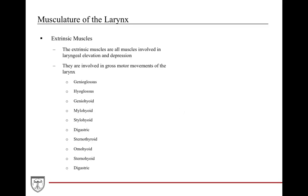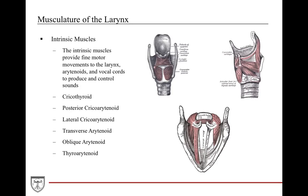Now let's talk about the laryngeal musculature. The larynx is split into two components: the extrinsic muscles and the intrinsic muscles. The extrinsic muscles are the muscles we've already discussed — those involving laryngeal elevation, depression, and gross motor movements covered in the muscles of the neck chapter. The intrinsic muscles provide fine motor movement to the larynx and the arytenoids, helping with vocal cord movement to produce sounds. These muscles consist of the cricothyroid, the posterior cricoarytenoid, the lateral cricoarytenoid, the transverse arytenoid, the oblique arytenoid, and the thyroarytenoid.